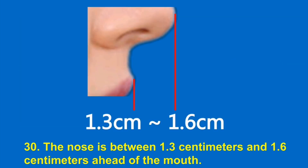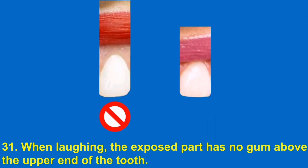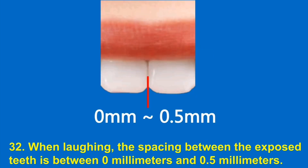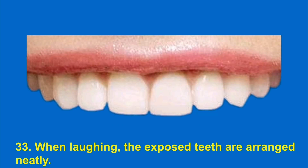30. The nose is between 1.3 cm and 1.6 cm ahead of the mouth. 31. When laughing, the exposed part has no gum above the upper end of the tooth. 32. When laughing, the spacing between the exposed teeth is between 0 mm and 0.5 mm. 33. When laughing, the exposed teeth are arranged neatly.